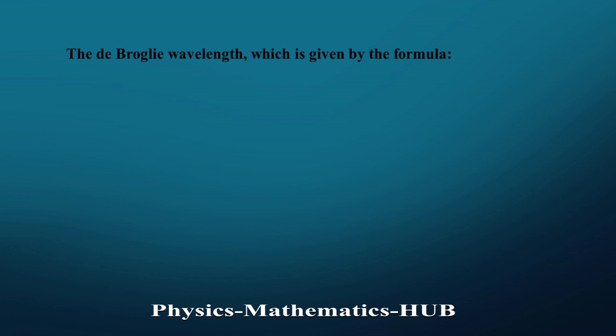It is clear that the resolution R of the microscope is approximately equal to the wavelength of the electrons being used. So let us find the de Broglie wavelength λ using the de Broglie equation, which relates the momentum p of the electrons to the wavelength: λ = h / p.